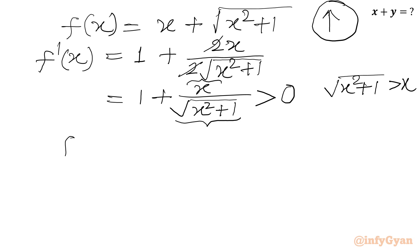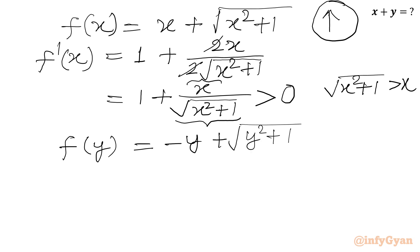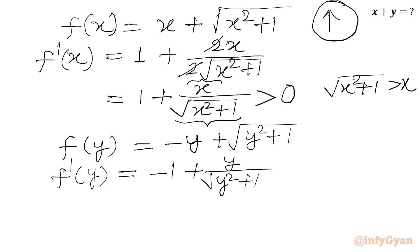Similarly, f(y) equals minus y plus square root of (y squared plus 1). Calculating f prime(y), it comes out to minus 1 plus y over square root of (y squared plus 1). Since the denominator is bigger than the numerator, the value is fractional, and f prime(y) is always negative. So f(y) is always a monotonic decreasing function.